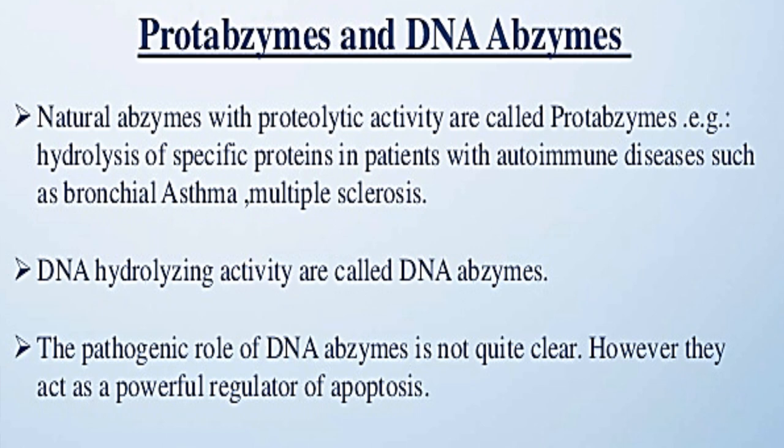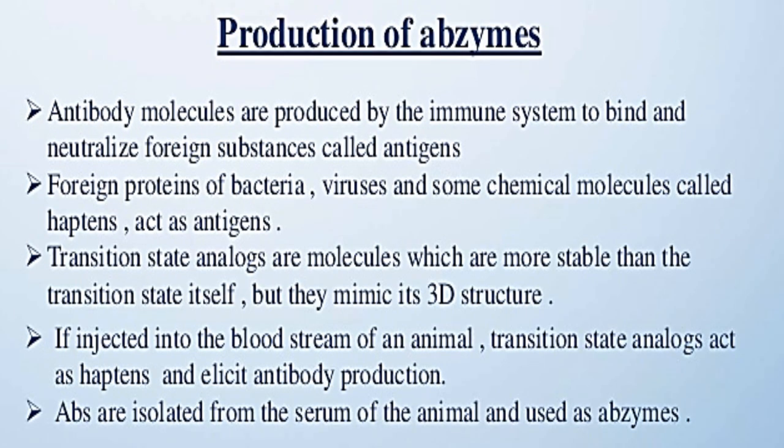Production of abzymes: antibody molecules are produced by the immune system to bind and neutralize foreign substances called antigens. Foreign proteins of bacteria, viruses, and some chemical molecules called haptens act as antigens. Transition state analogs are molecules which are more stable than the transition state itself, but they mimic its 3D structure.